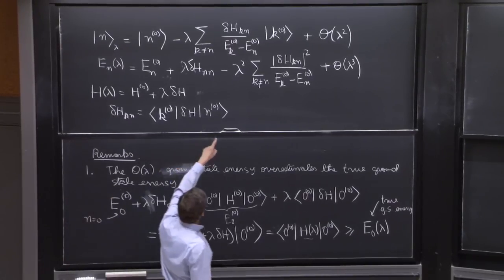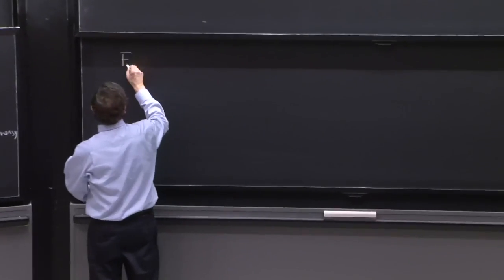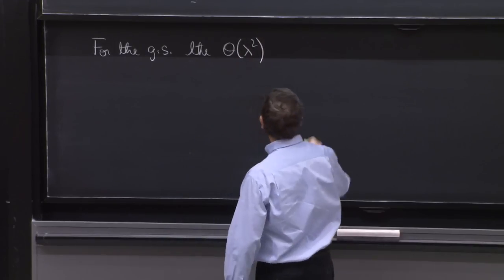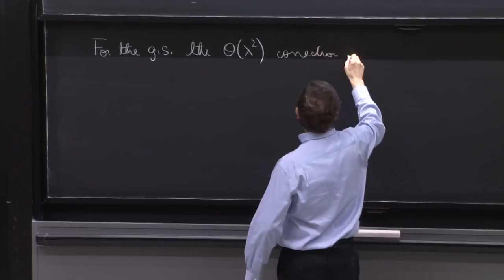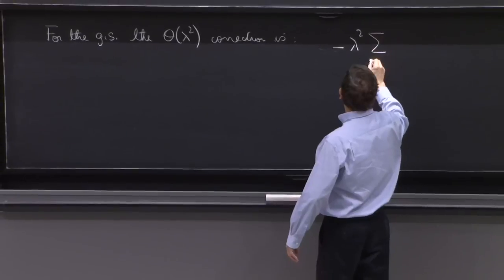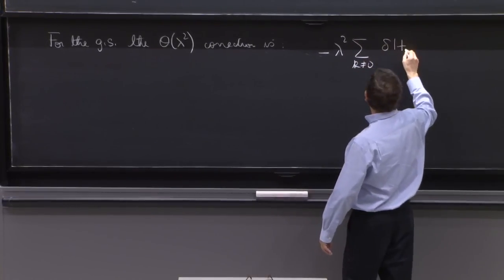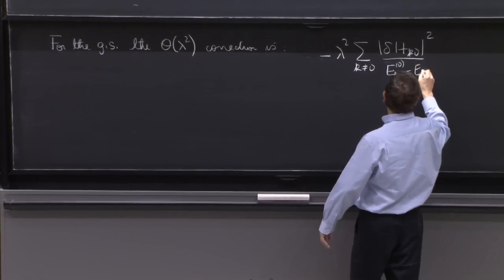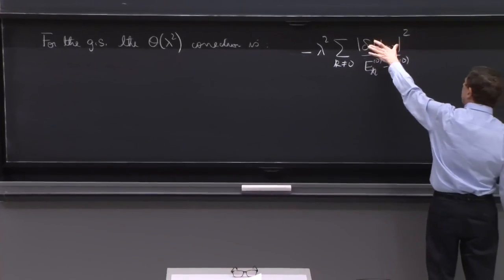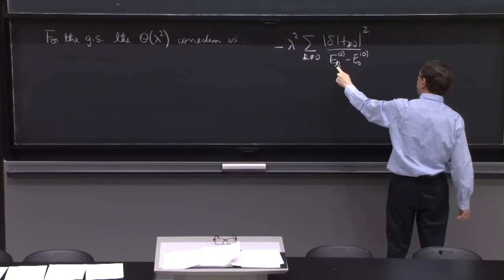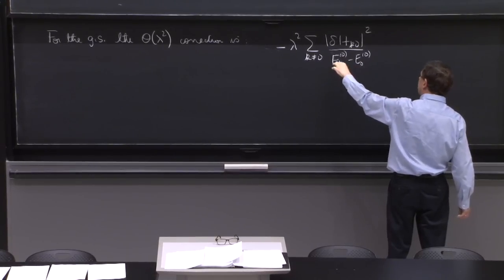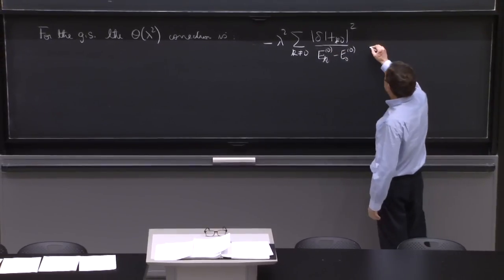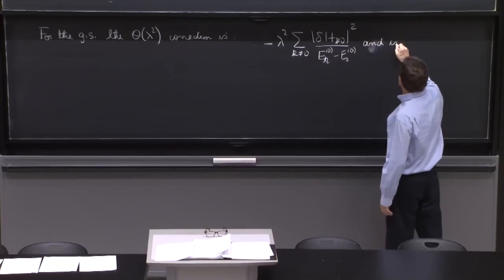Therefore, this is greater than or equal to the true ground state energy that we would call E0 lambda. So that's a nice result. And it matches with the idea that for the ground state, the order lambda squared correction is negative.